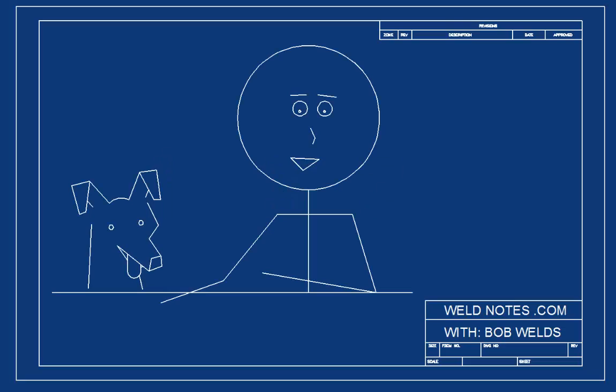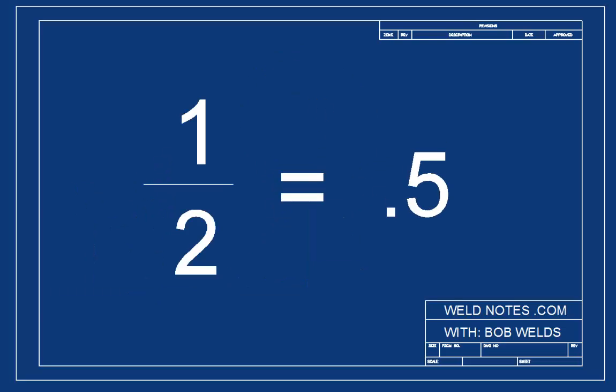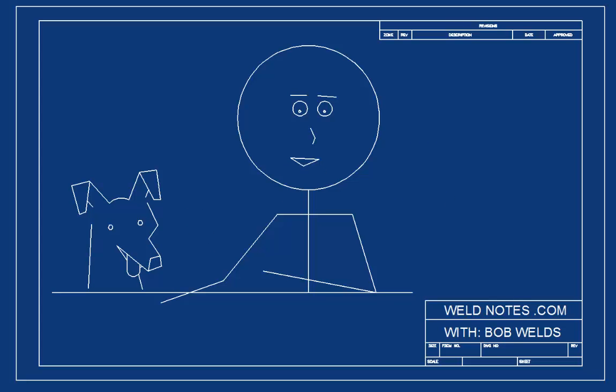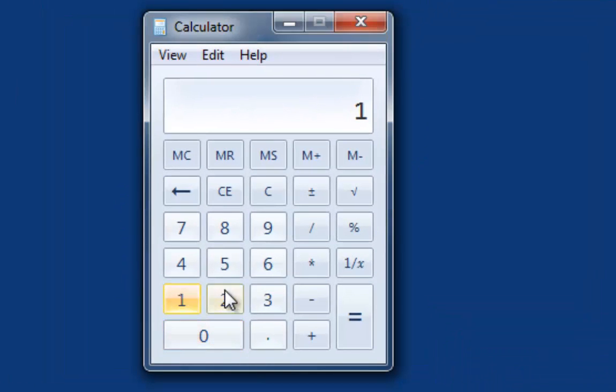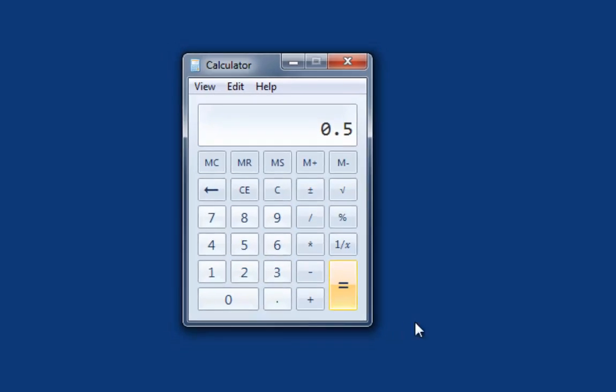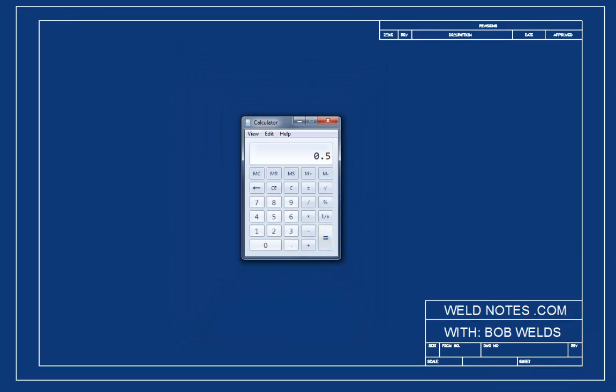The decimal equivalent of 1 over 2 is 0.5. You see, since 1 half means 1 divided by 2, that's all we need to type into the calculator. Press 1, then hit the divide by button, then press 2. When you press equals, the answer pops up. 1 half is 0.5.